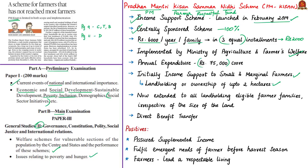The ambit of the scheme has now been extended. Presently, all landholding eligible farmer families can avail benefits under the scheme irrespective of the size of the land. The fund is transferred directly to the beneficiary's account by the Direct Benefit Transfer, or DBT, method. The beneficiaries are identified by the respective state governments and administration of union territories. The scheme is implemented by the Ministry of Agriculture and Farmers Welfare, and incurs an annual expenditure of Rs. 75,000 crore. Let us now know the benefits or positives of this scheme.